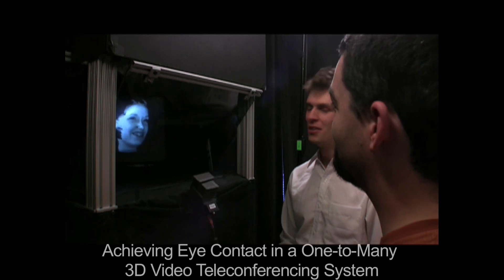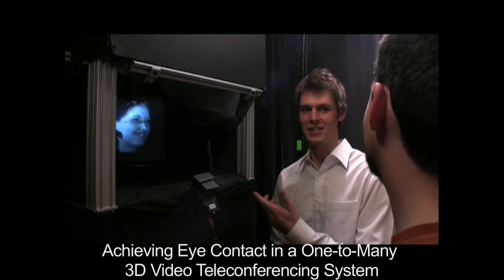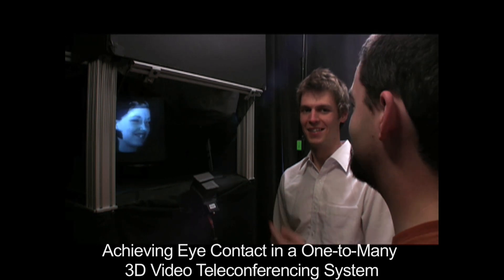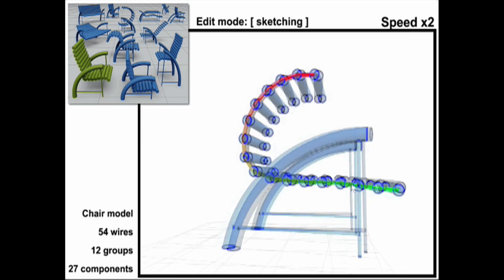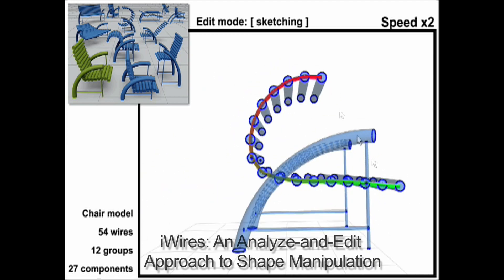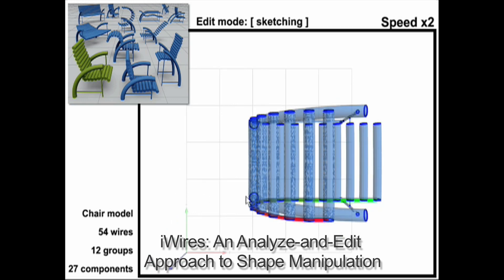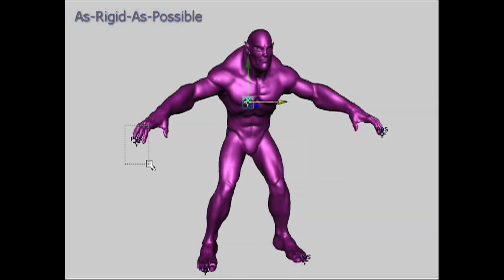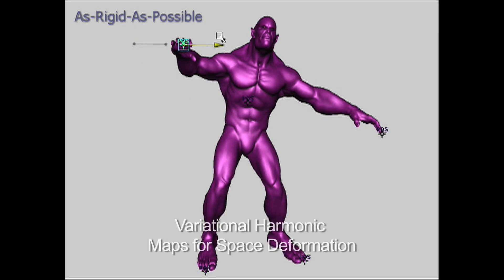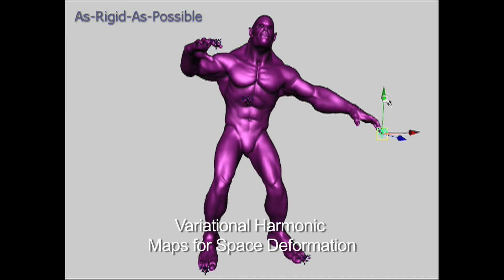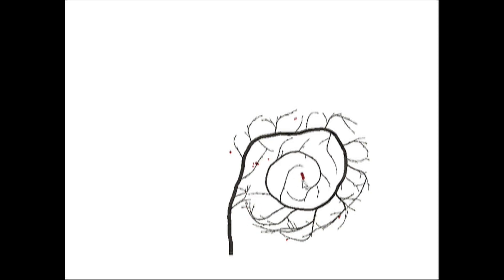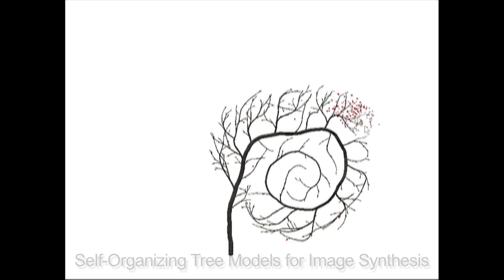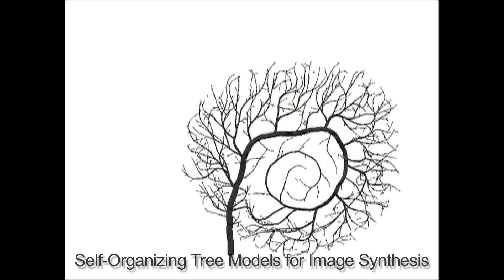And foster better video conferences where people look at you, not just the camera. New modeling tools include intuitive manipulation of shape deformations using intelligent wires. Or deform models as rigidly as possible while retaining surface detail using variational harmonic maps.